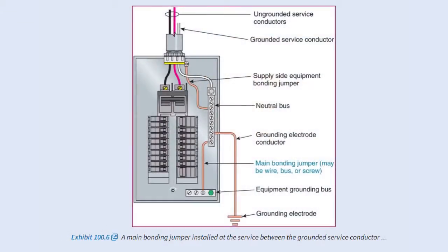We talked about a grounded conductor and a grounding electrode. A grounding electrode conductor — what are we talking about? As we can see in exhibit 100.6, it's the conductor that's used to connect the system grounded conductor or the equipment to a grounding electrode or a ground rod. It's always to a point; it's used to connect to a point on the grounding electrode system.